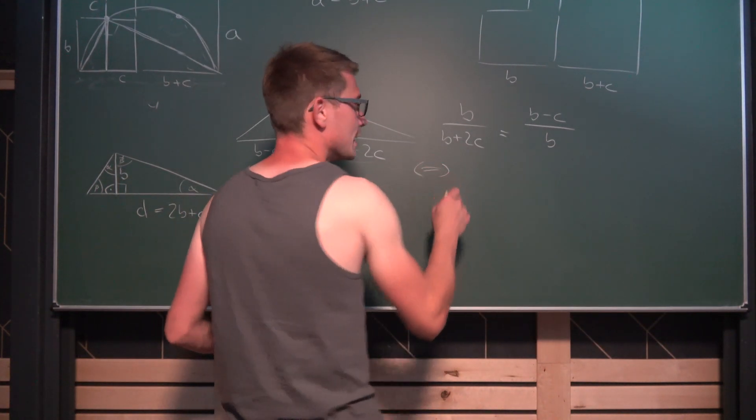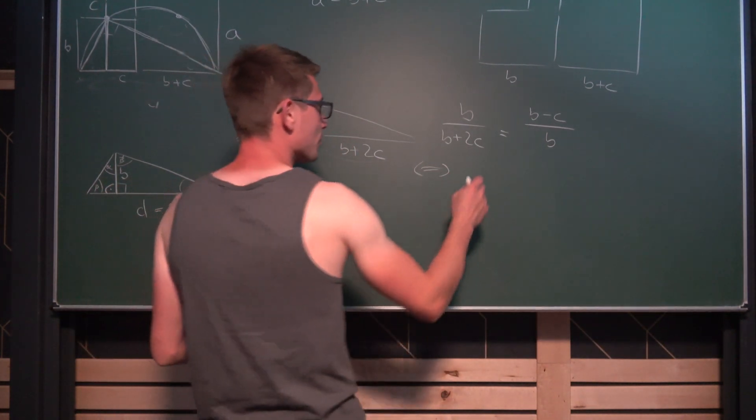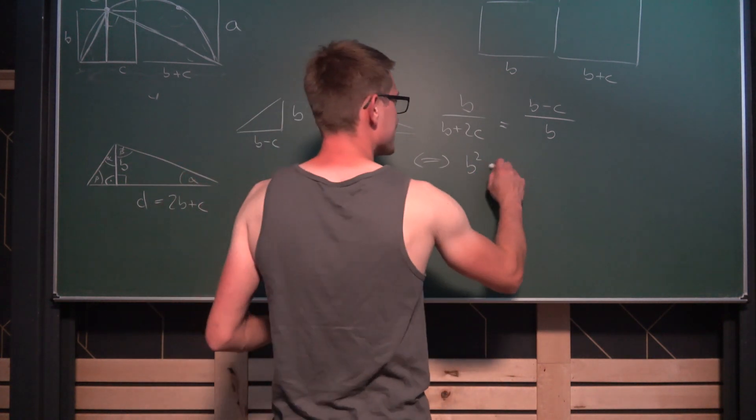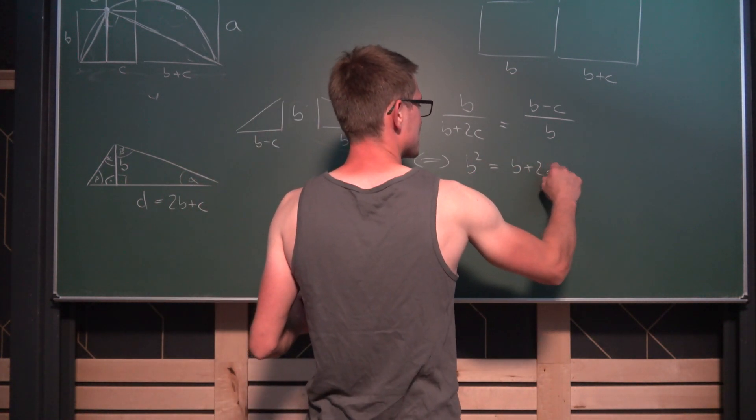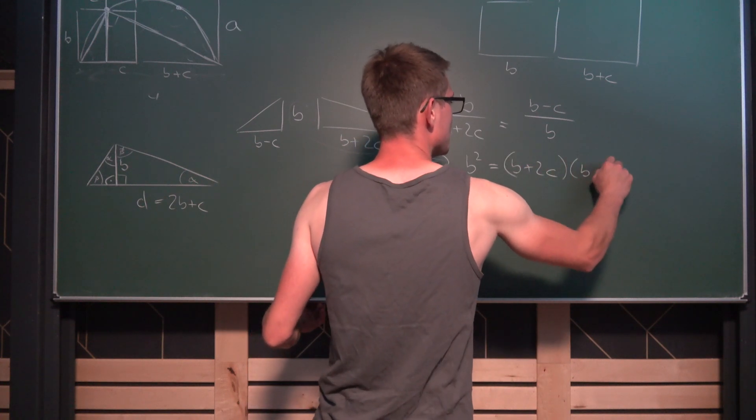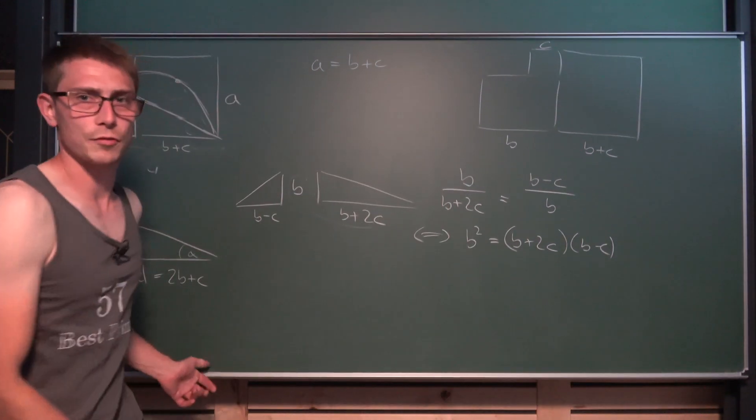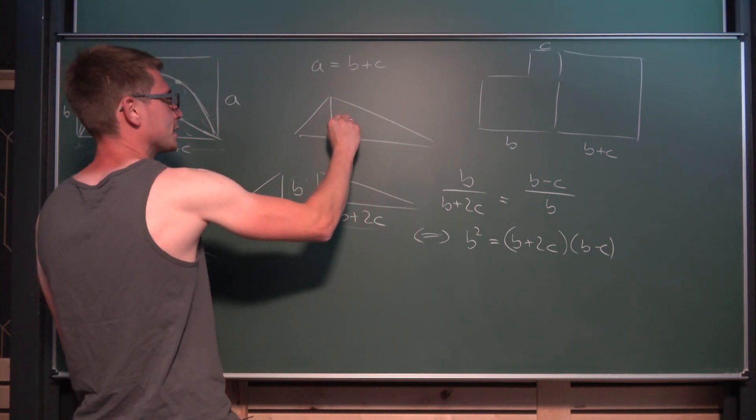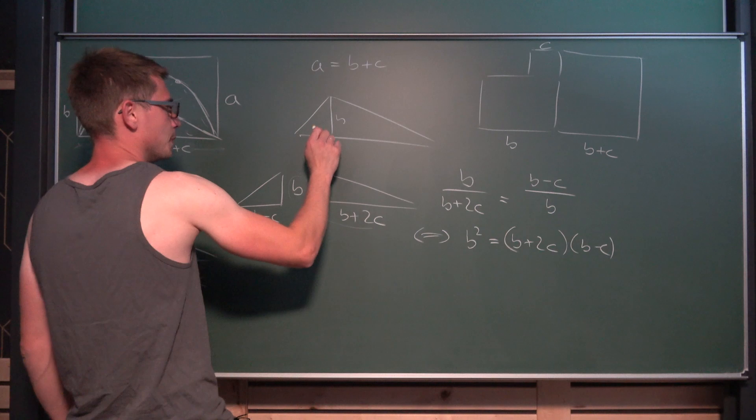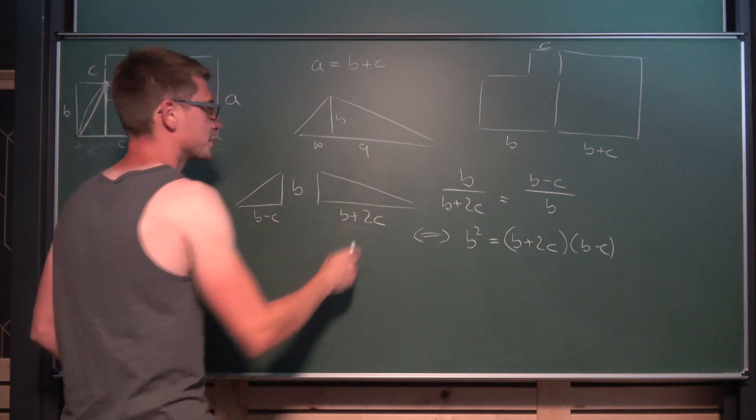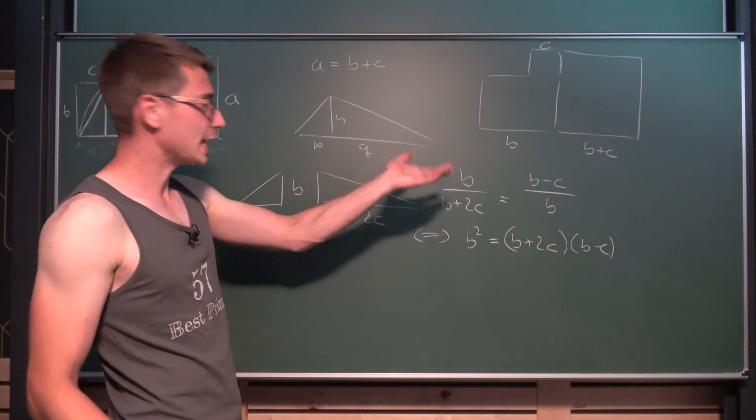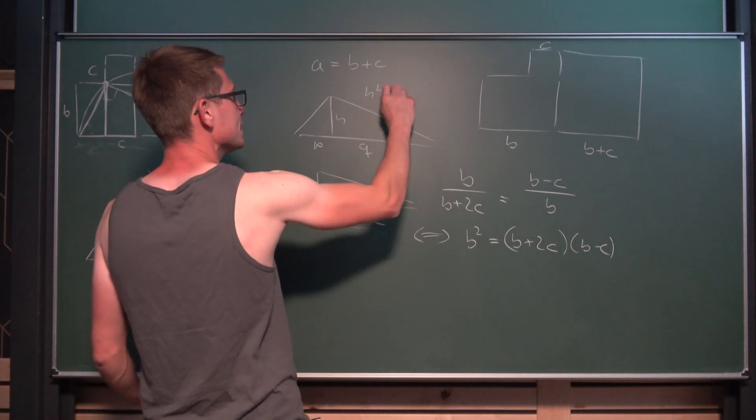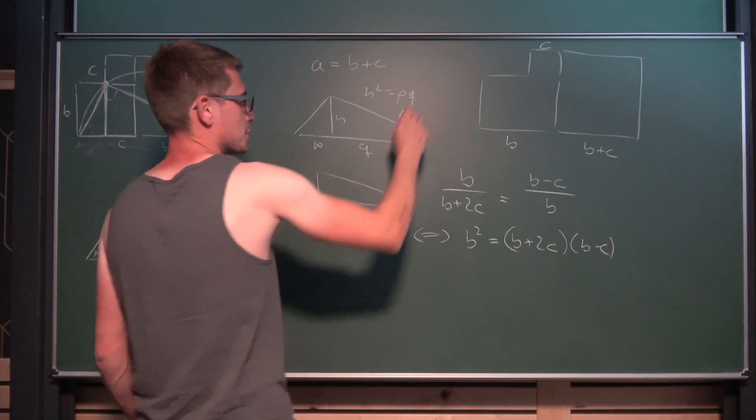We are going to arrive at Euclid's height theorem for right triangles, which is the height squared is equal to B plus 2C times B minus C. So this is just a fun little fact: if you have this height inside of a right triangle and this right here is P for example and this is Q, then what you get from this theorem is exactly that the height squared is equal to P times Q. This just follows from this relationship in similar triangles.